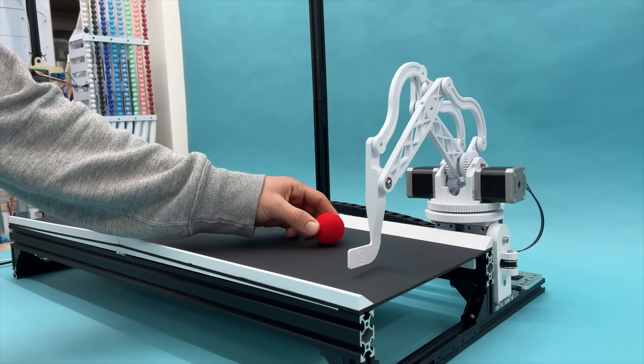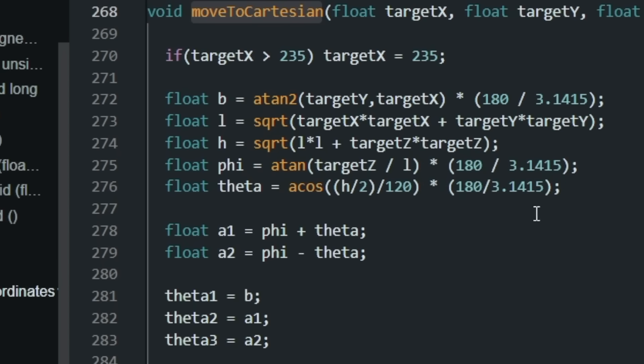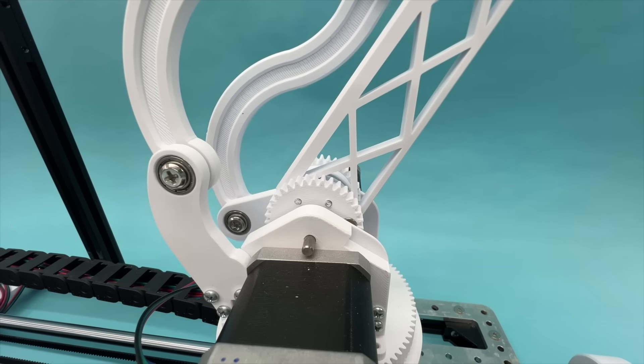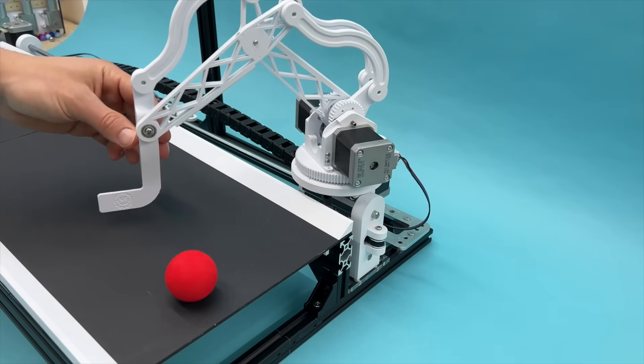The next challenge is getting the robot arm to the right spot at the right time. This is where inverse kinematics comes in, which is math that takes the position we want the end of the arm to go to and works backwards to find the correct motor angles to get there. The arm has three degrees of freedom, which means that we need the positions of each of the three different motors to get the robot where we want it to go. To extend its reach, the arm is mounted on an 800mm slider, which adds a fourth axis of motion.